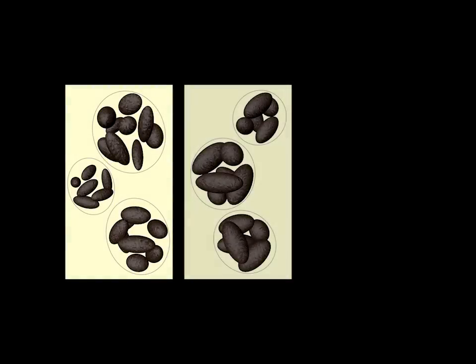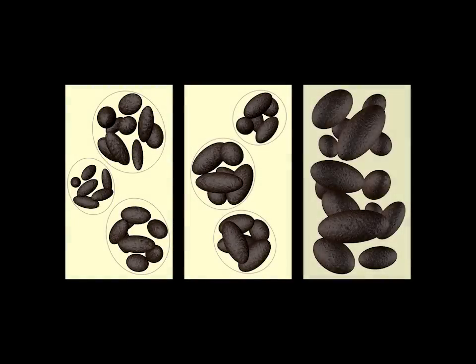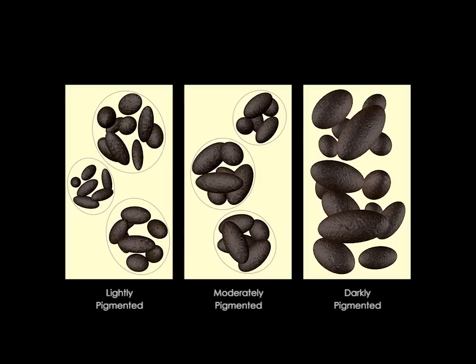Moreover, Helios accounts for the fact that melanosomes may form complexes of different sizes or appear individually dispersed within the epidermal layers of skin specimens with different levels of melanin pigmentation.